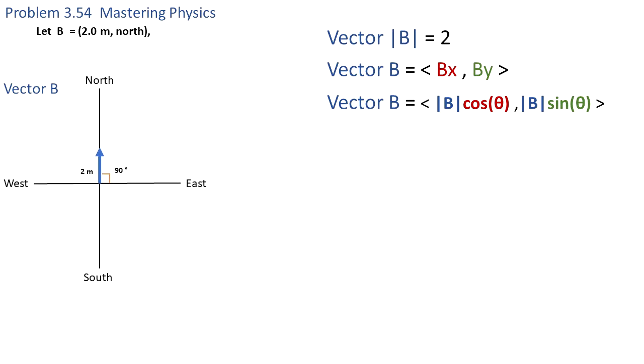The x component Bx is equal to the magnitude of B times the cosine of the angle, and By is equal to the magnitude of B times the sine of the angle. The magnitude is 2 and the angle between the x-axis and the vector is 90 degrees.